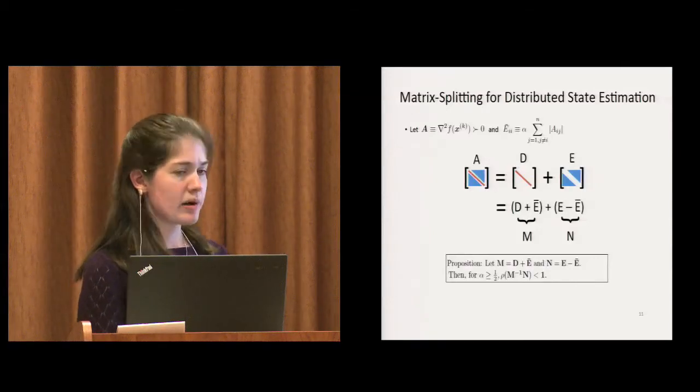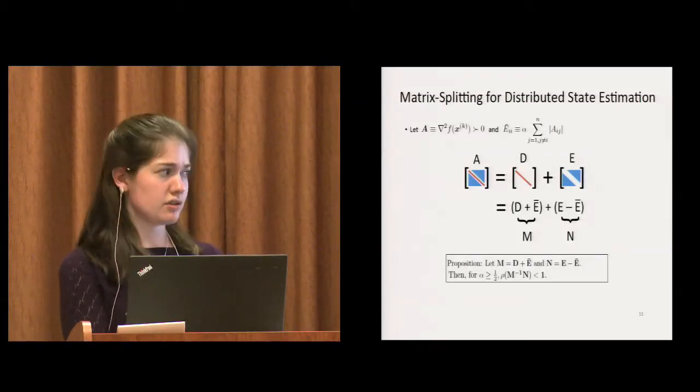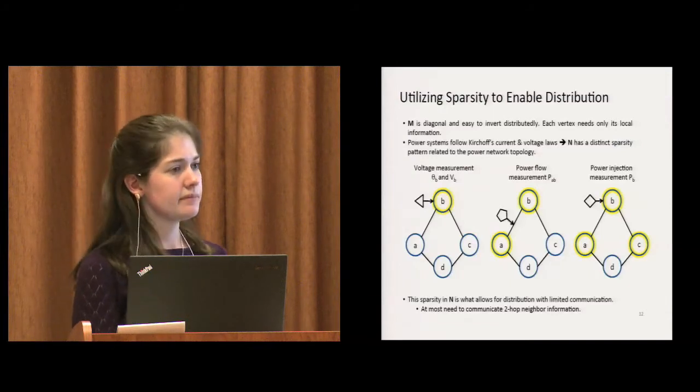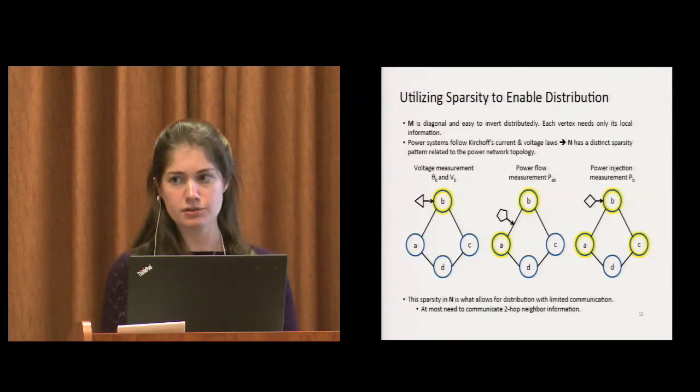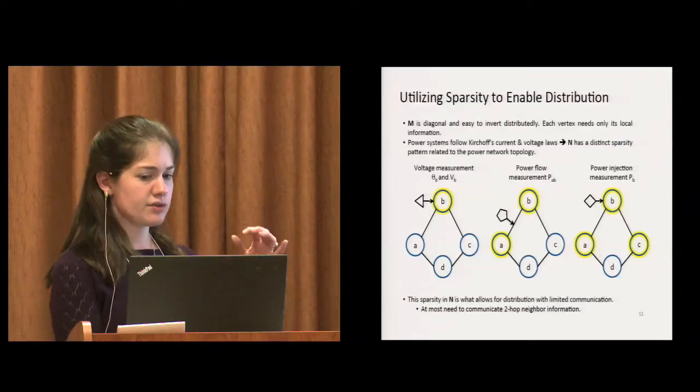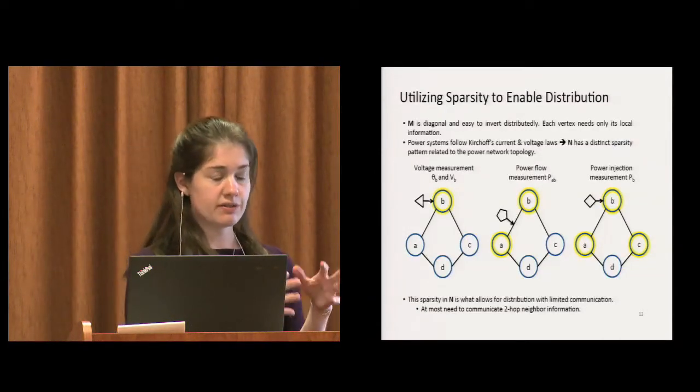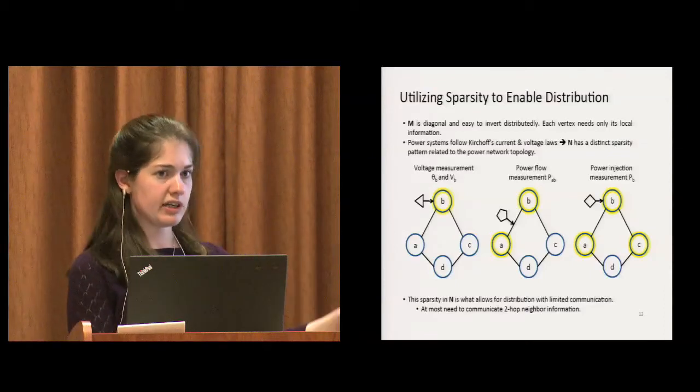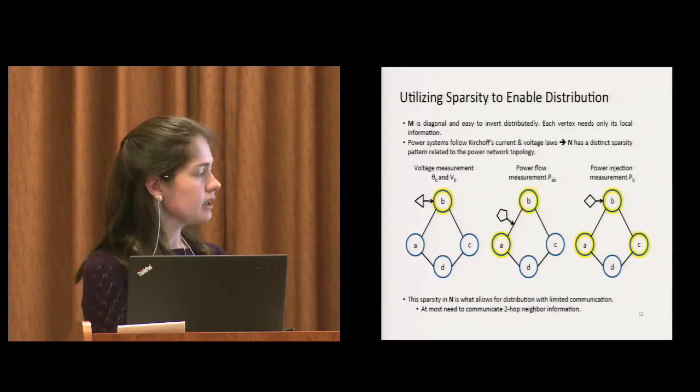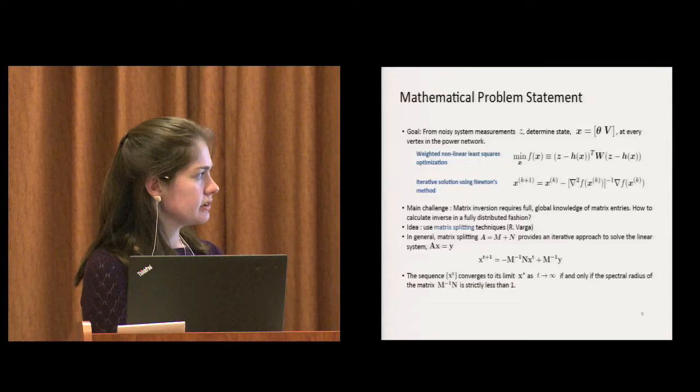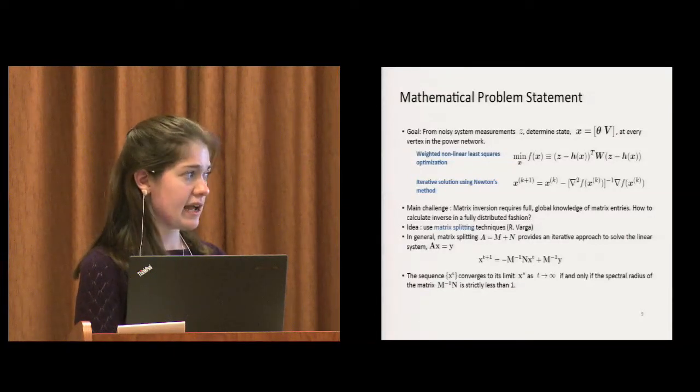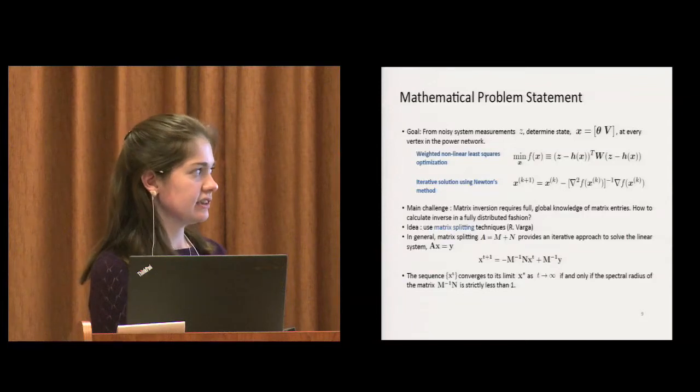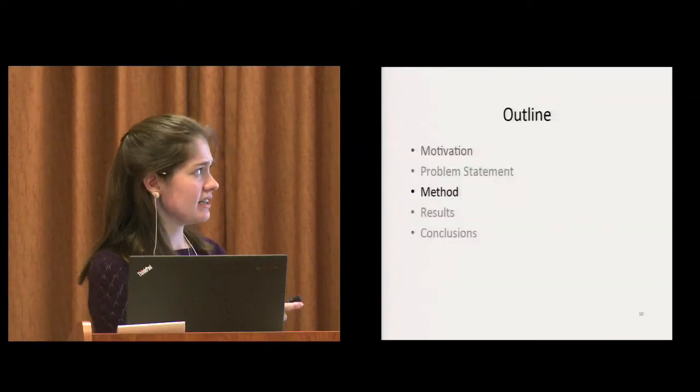How about making sure that this is easy to do in a distributed way? M is diagonal. It's trivial to invert. It's easy to do distributedly because each vertex has all of the information it needs locally to compute its corresponding entry in the matrix M. Just to remind you, in this scheme, instead of inverting A, the only thing you're inverting is M. So since it's diagonal, that makes that easy.